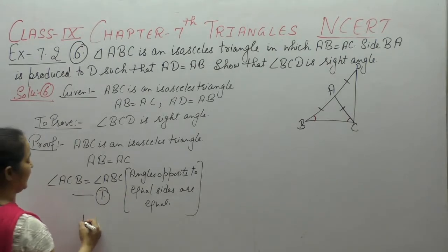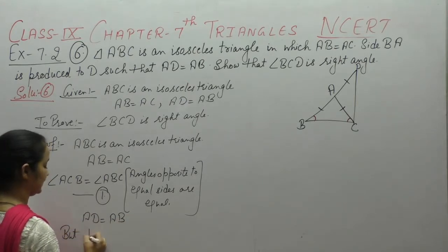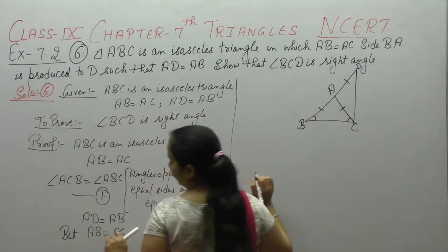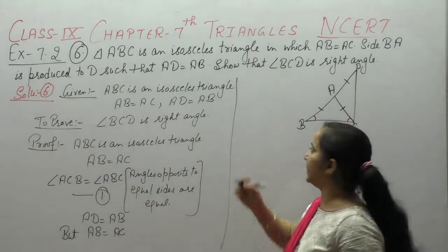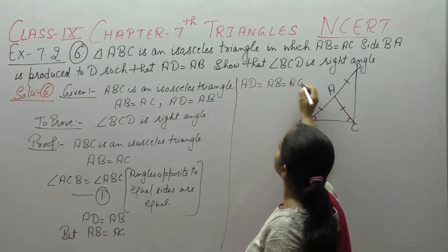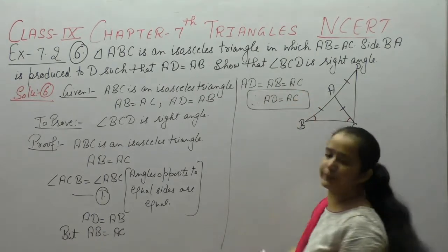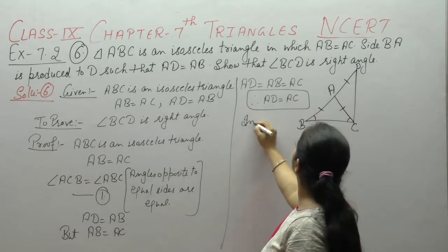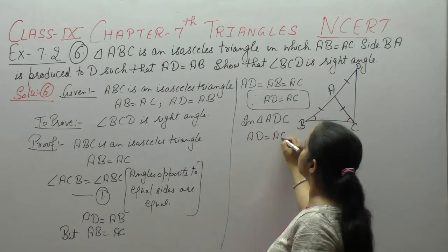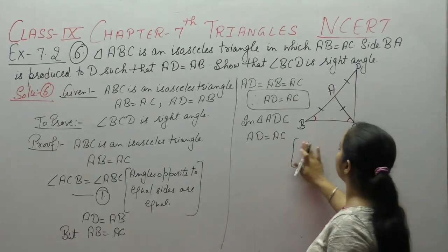Now, हमें given है कि AD is equal to AB, but AB equal है AC के। AD, AB के equal है और AB, AC के equal है — means तीनों sides equal हैं: AD is equal to AB is equal to AC. Therefore AD is equal to AC.